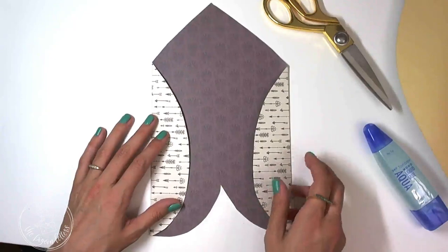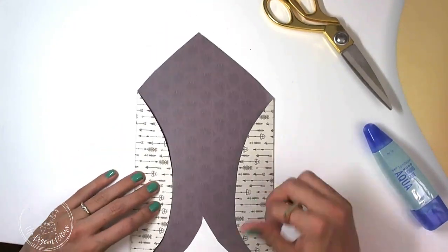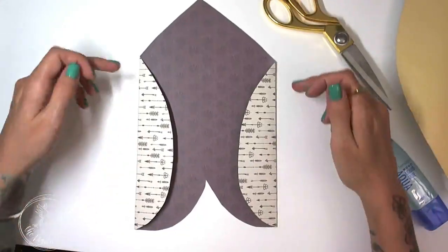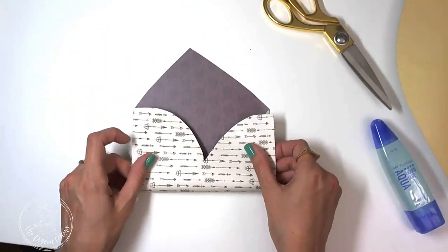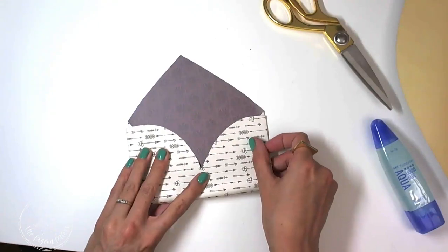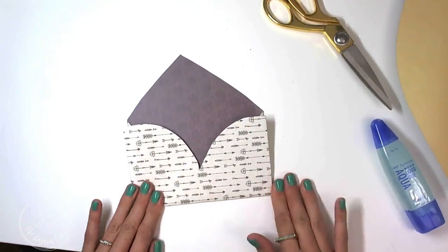So now we're going to flip this part up. The bottom part of this is going to reach the top here. So the crease is going to be right about in the middle. There we go.